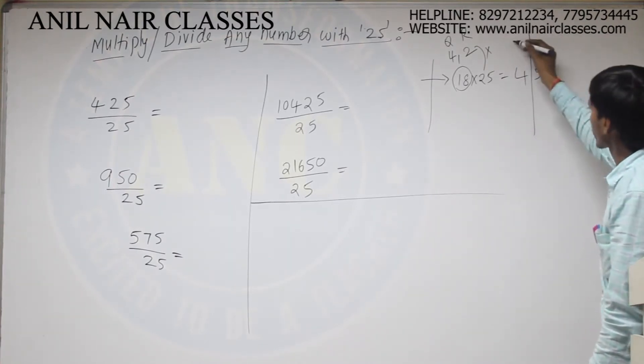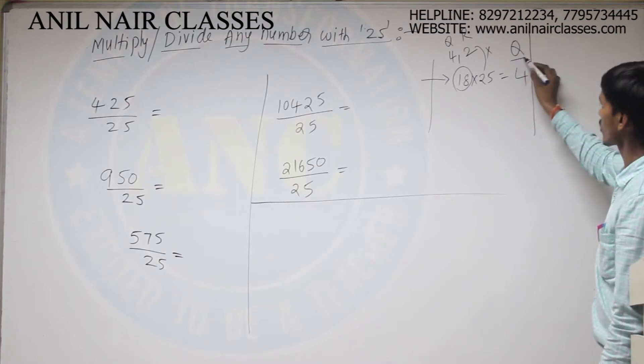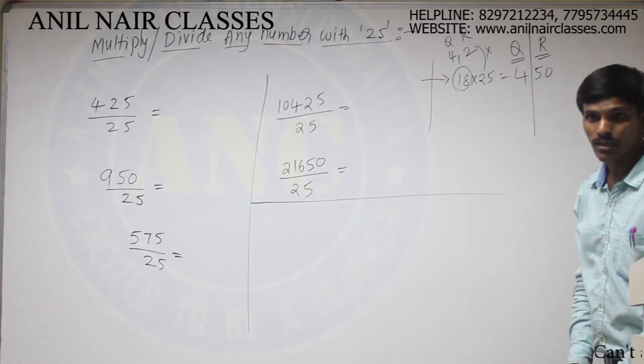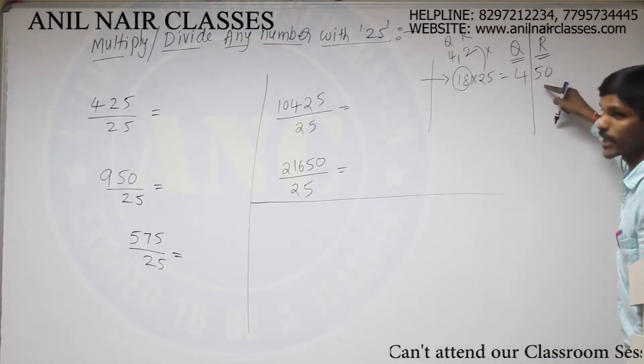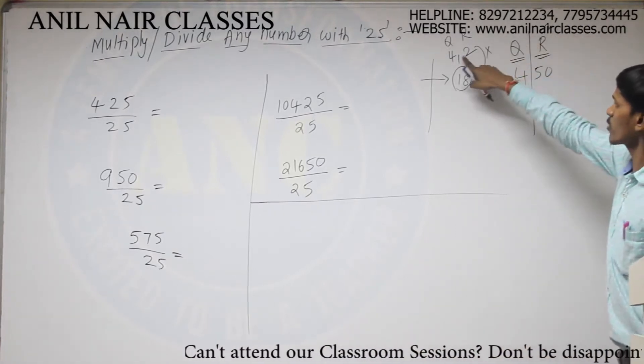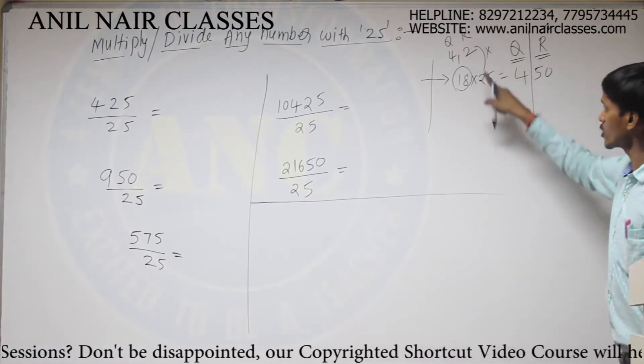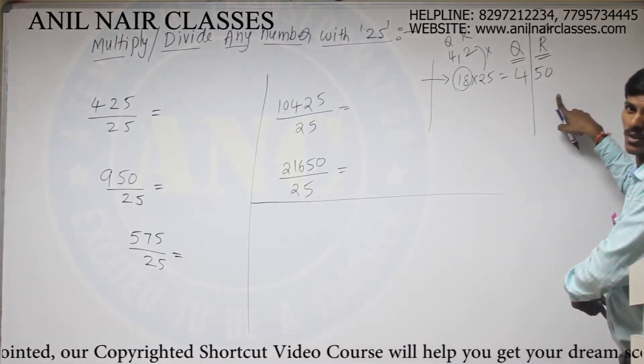Here, what I will do, I can consider this one as the result of coefficient and this one will be the result of remainder. If the remainder is 2, I got 50. If the remainder is 1, 1 into 25, I will get 25. If the remainder is 3, 3 into 25, 75.